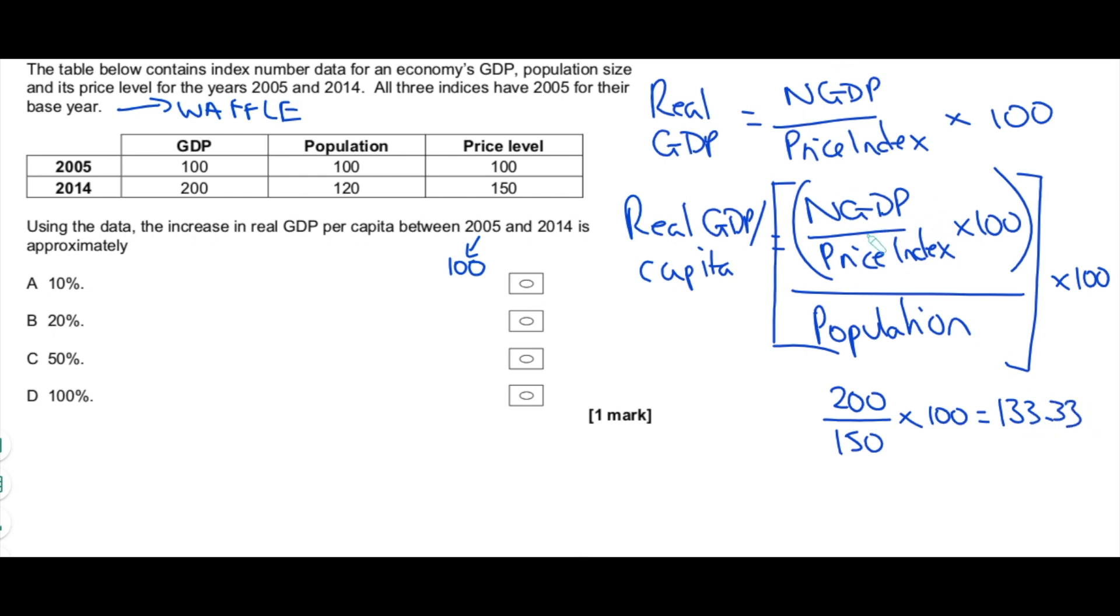That's the top part of this equation here, that's real GDP. But now we need per capita, so we need to divide that. So we need to go 133.33, divide by the population index, which is 120, and then multiply that by 100. And if we do that, that will give you an exact answer of 111.11. Now we know that in 2005, real GDP per capita as an index number is 100. In 2014, we've just worked out that it's 111.11. As a percentage change, that gives you 11.11% increase. And therefore, the answer is approximately 10%. You see how easy that was? Ridiculously simple.